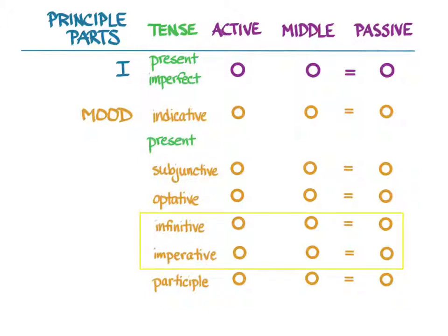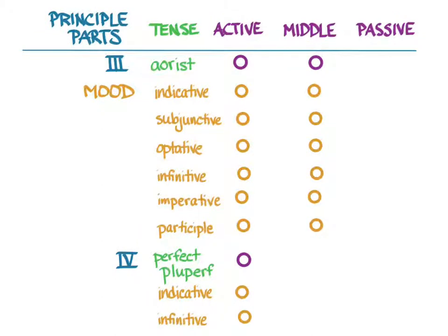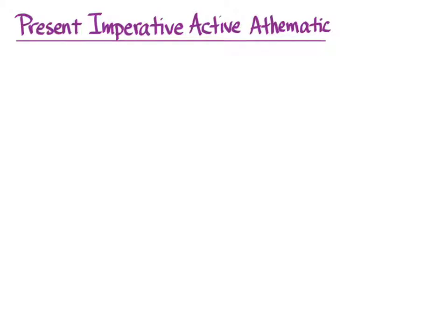This video will cover the present infinitive active, middle, and passive, and the present imperative active, middle, and passive. We'll save the participle for the future. From the third principal part, we've done the aorist indicative, subjunctive, and optative, and now it's time for the aorist infinitive and aorist imperative, both active and middle. This video will also cover, for ἵστημι, the perfect infinitive. So let's start with the present imperative active for athematic verbs — μι-verbs.